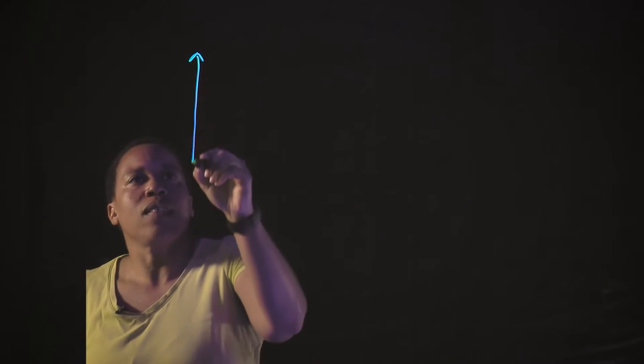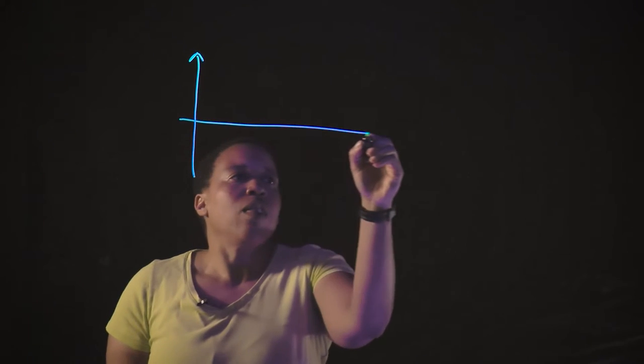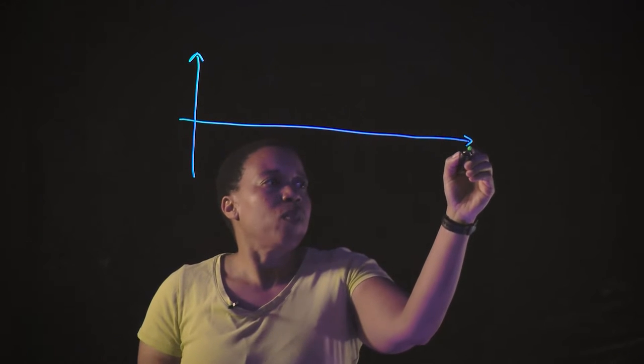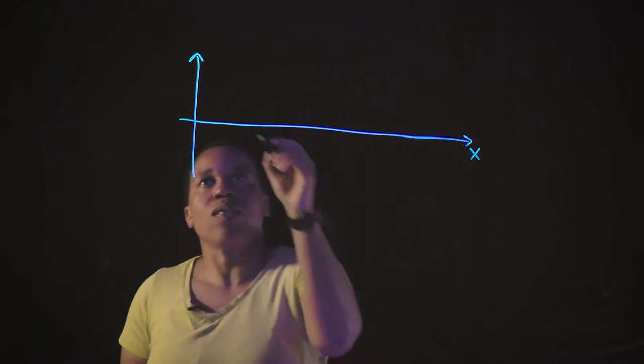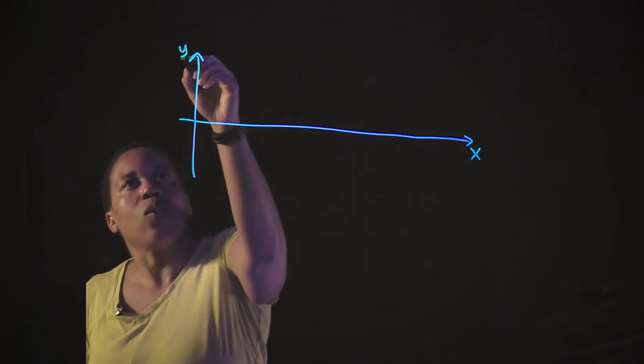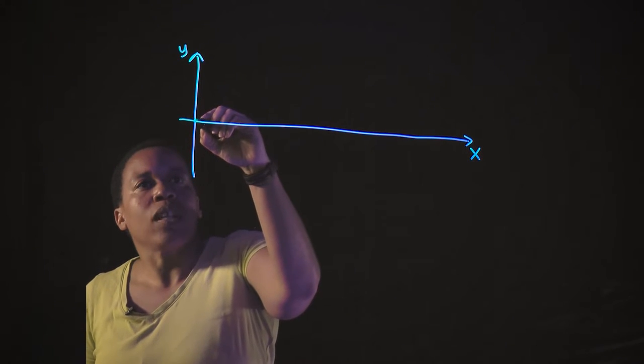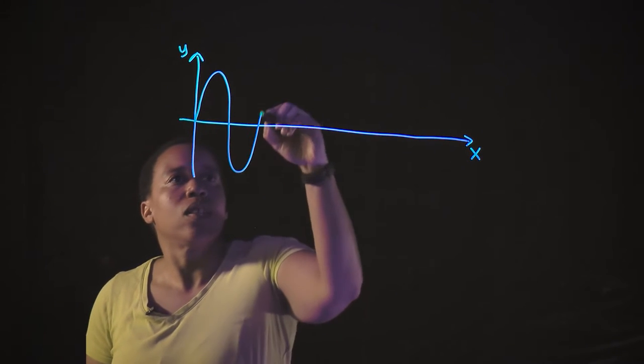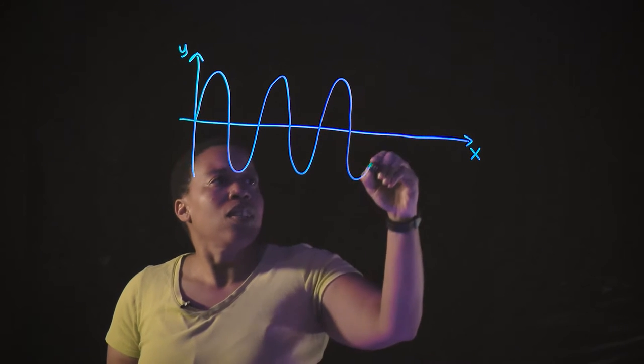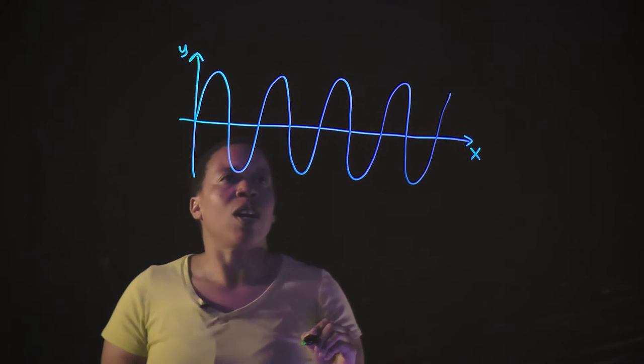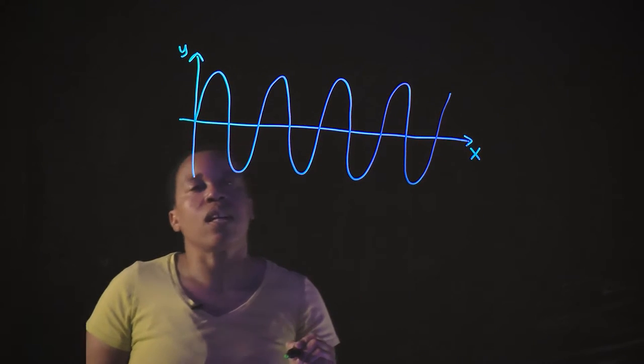So let's say that we represent the amplitude of our wave as a function of position, so this is a distance x and a height y, and so let's draw our wave, and you can see that it's a sinusoidally varying function of position.